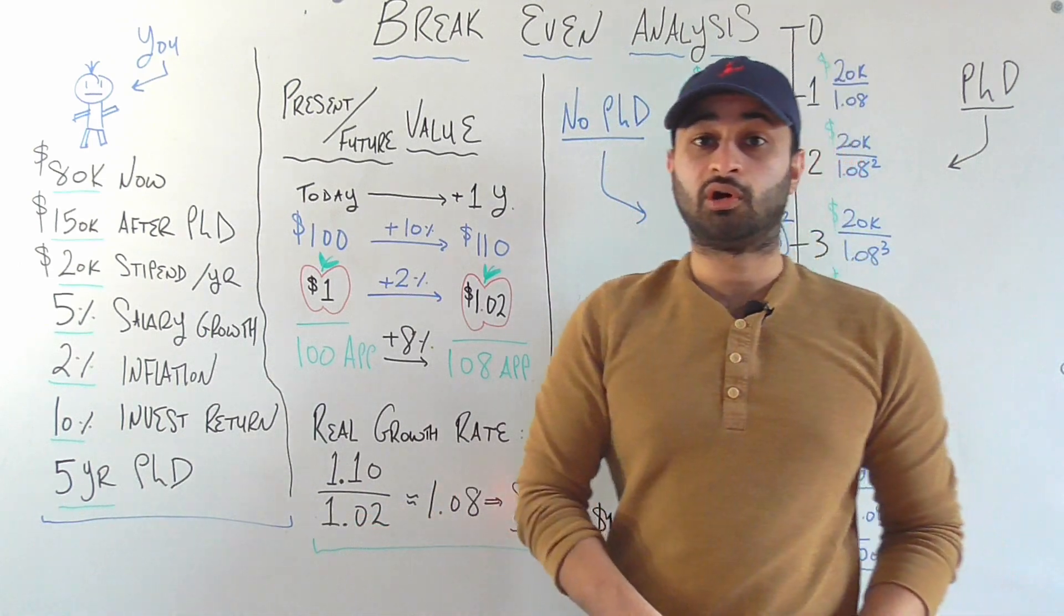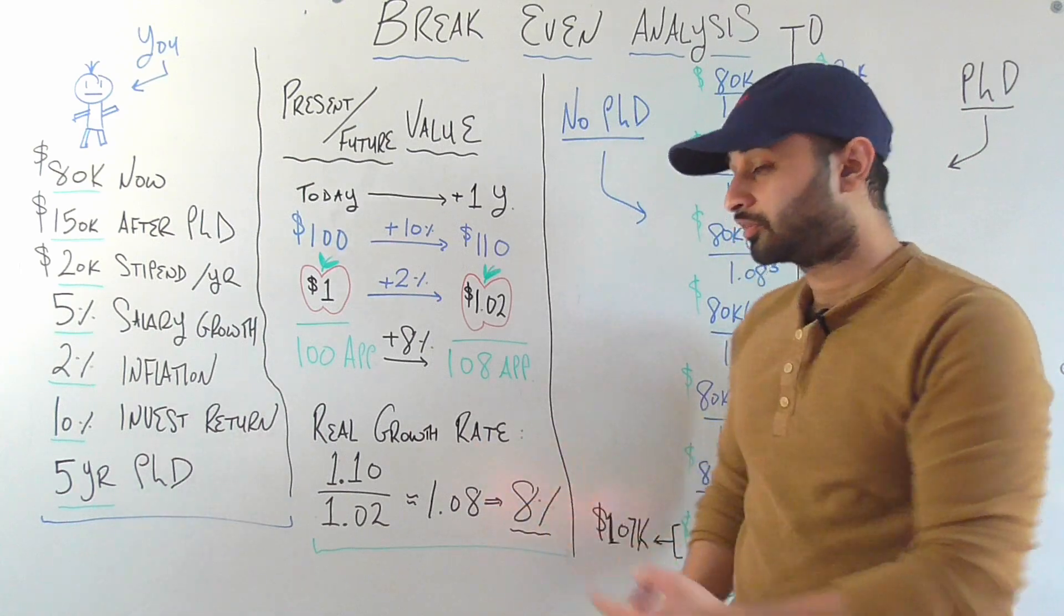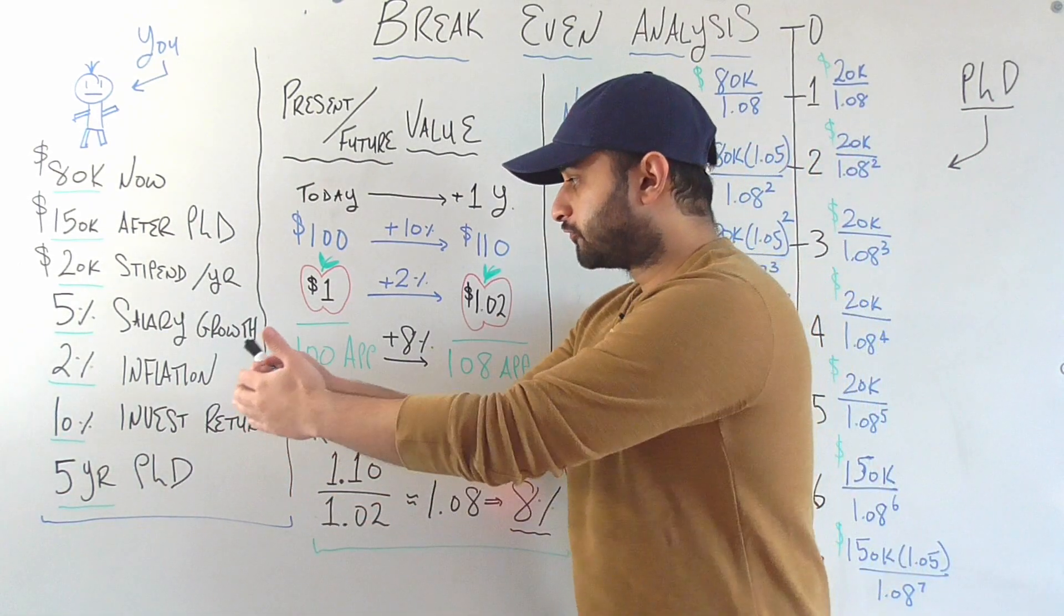And you would get about 1.08, which is your 8% growth in purchasing power. And so this was the forward direction.